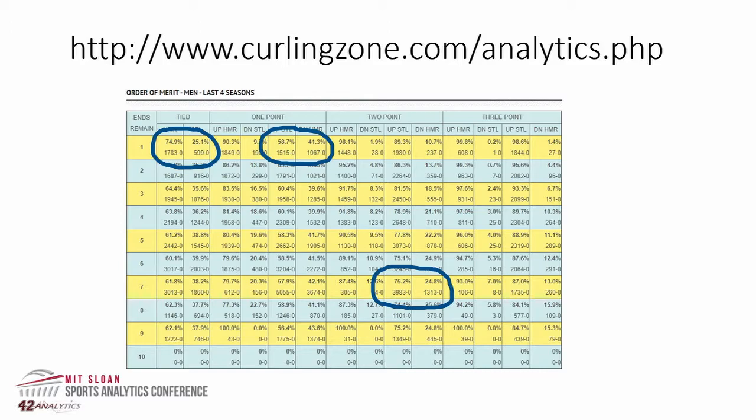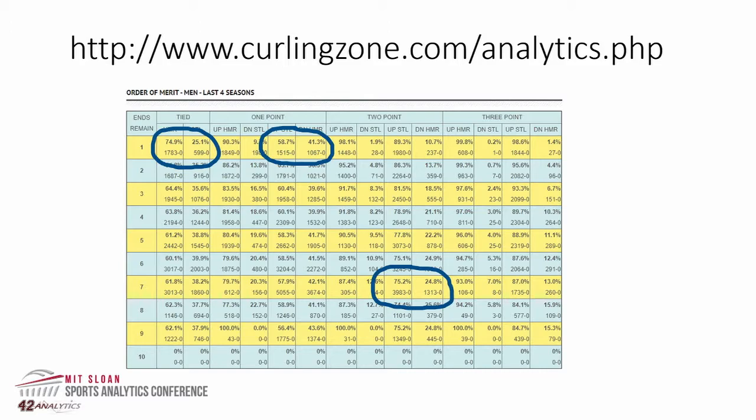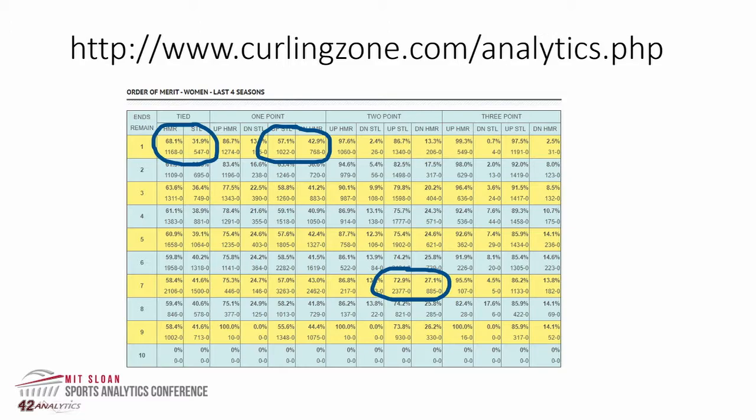They highlighted a couple of key situations: a tie in the last end, up one without hammer, down one without hammer, and then an early situation within the game as well.